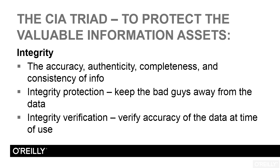The next aspect of integrity deals with the completeness of information. Suppose we have a database with a thousand records, and you submit a query for people from California. We might have 500 people in our database from California. If your result set only shows 15 of those 500 records, your information isn't complete, and therefore the integrity of the information is not very high. Completeness says you get access to all of the relevant information.